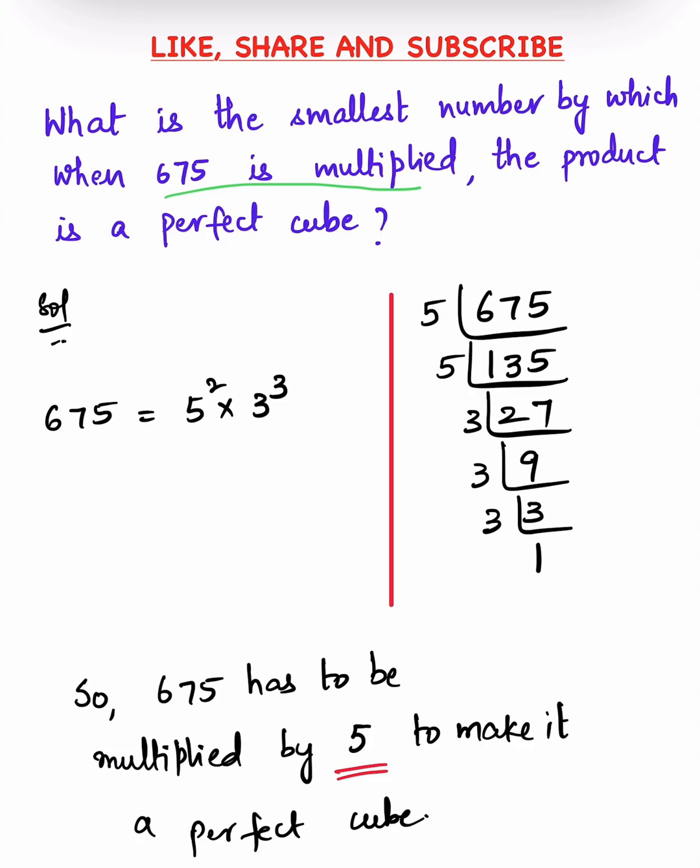In order for this 675 to be a perfect cube, it has to be expressed in powers of 3. If all the prime factors are in powers of 3, then it is a perfect cube because its cube root can be easily found out.